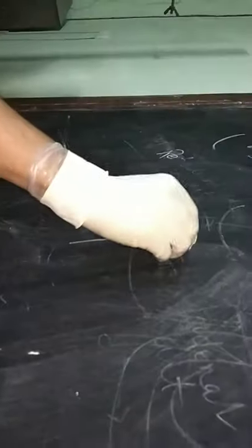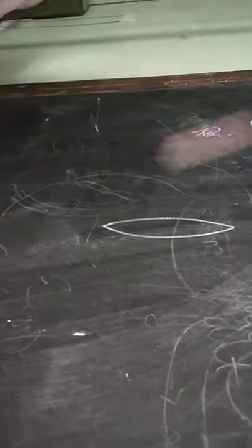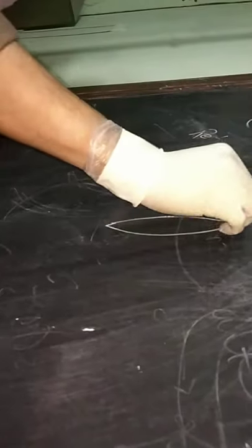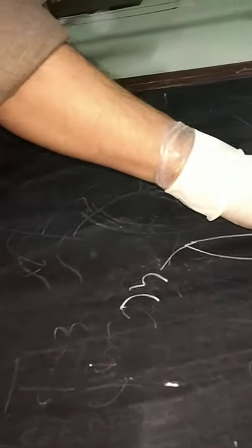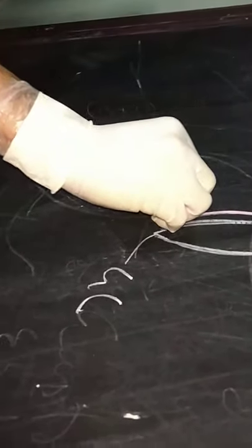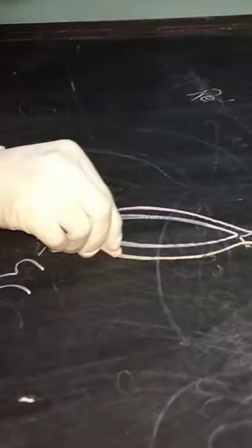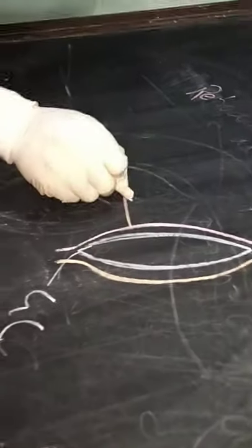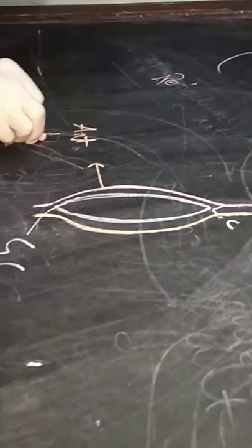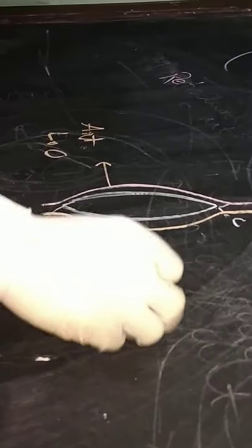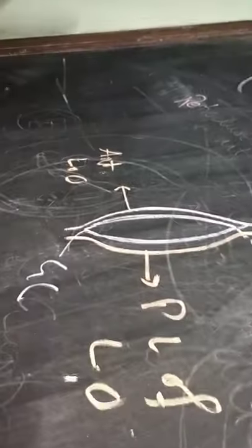In the schematic sagittal diagram of the stomach, this curvature is known as the lesser curvature, the anterosuperior surface, and the postero-inferior surface. These two surfaces will be covered by peritoneum. This layer is the anterior layer of the lesser omentum, and this layer is the posterior layer.